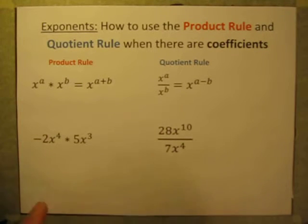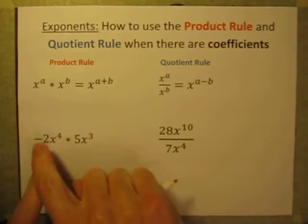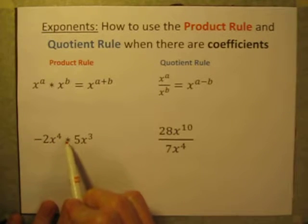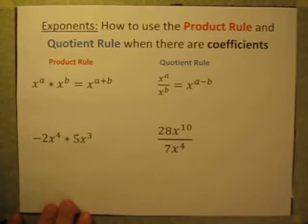So if we break it up and rearrange it, this is just a multiplication problem, negative 2 times x to the 4th power times 5 times x to the 3rd power.